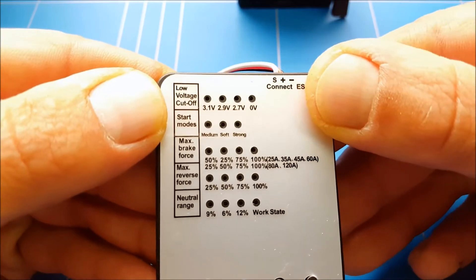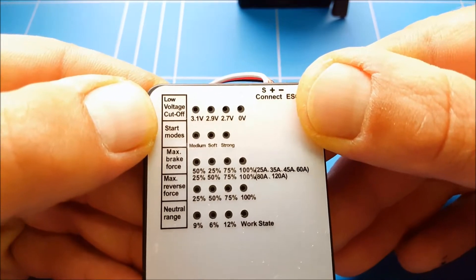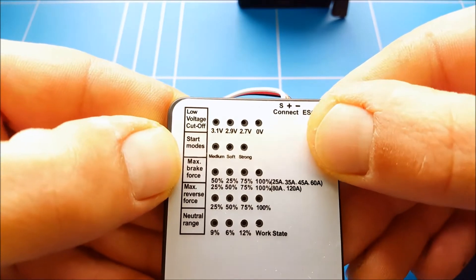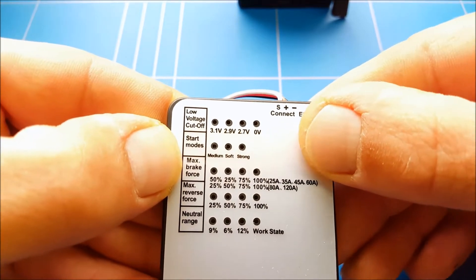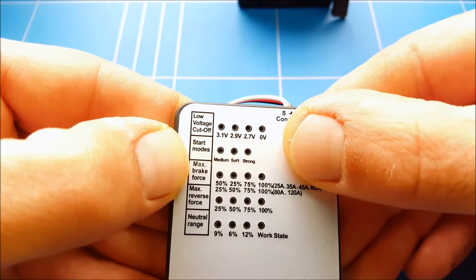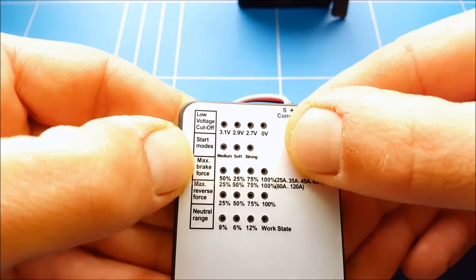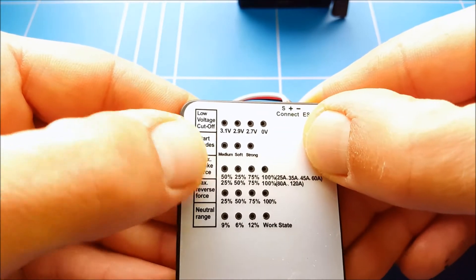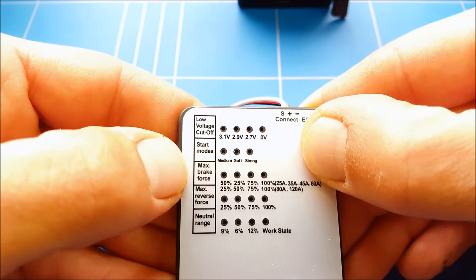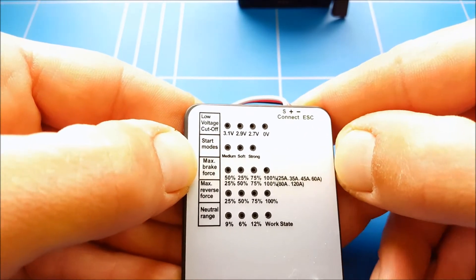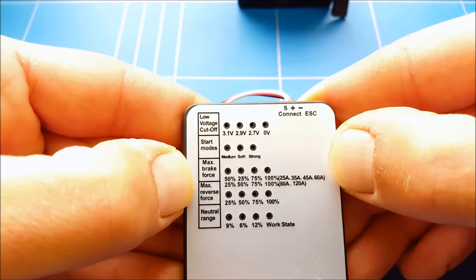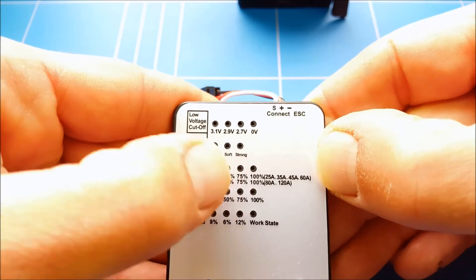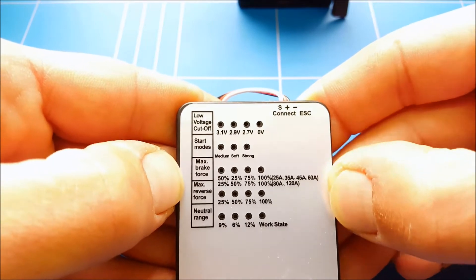Then you've got start mode - medium, soft, and strong - that is for acceleration. And maximum braking, which is of course braking of the motor. This is good for jumpers who would like to control it. The stock is set at 50% but I would prefer setting it back at 25% and then go from there. If I don't like it, then bump up the rates. It's the same with maximum reverse force - the higher you set it, the faster it will go into reverse.